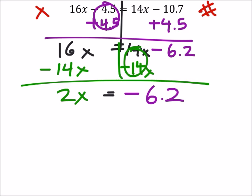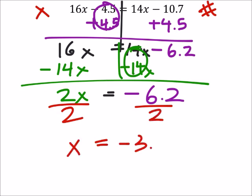Now all I need to do is to divide by 2 on both sides, and that will give me x, so that would be negative 3.1.